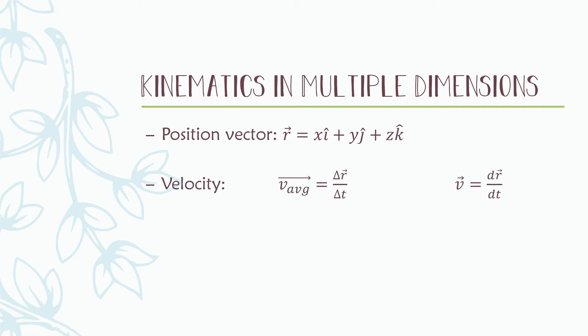Similarly, we could write the velocity. The average velocity is the change in that position vector divided by time, or the instantaneous velocity is the derivative of the position vector with respect to time.